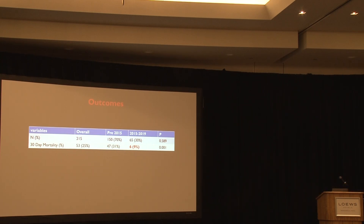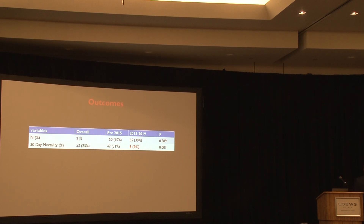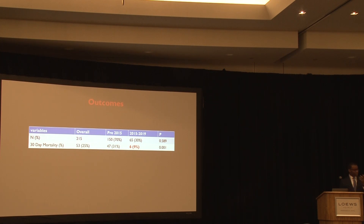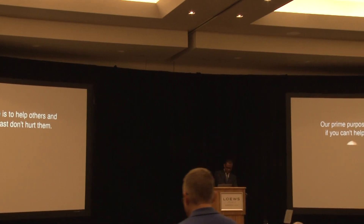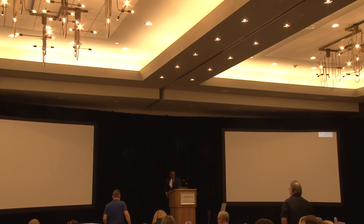What have been our outcomes? Since 2015, when we really started being more aggressive with both Type A and Type B aortic dissection management, our program mortality has been 9%, compared to 31% before that. The reason is a large, dedicated group of people with interest in aortic disease taking care of these patients — anchored by the leadership of Dr. Kevin Harris. Thank you very much for the opportunity.